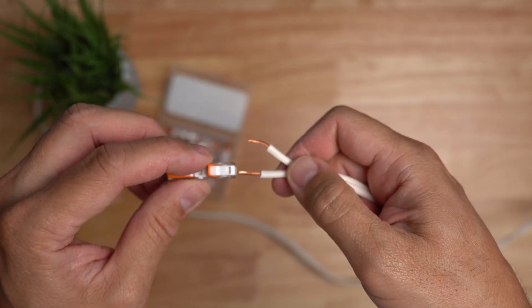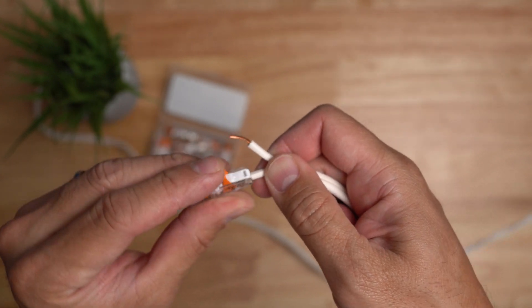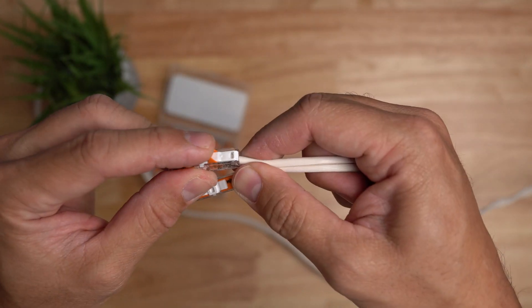Flip up the lever on the WAGO connector, insert the wire in and flip the lever down. Do the same thing on the other wiring.